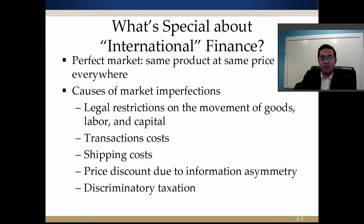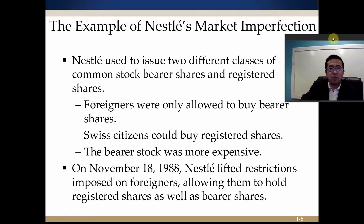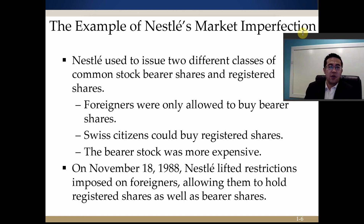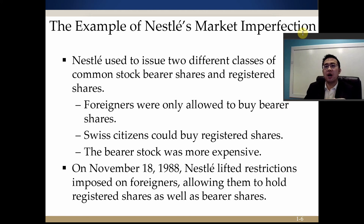There is also discriminative taxation, which is a very prominent issue in the current trade war between the US and China. Another example in financial markets is Nestle, a Swiss company. Nestle used to have two classes of stocks traded in the Swiss stock market — one class available only to foreigners (bearer shares) and another available only to Swiss citizens (registered shares). The bearer shares were more expensive for foreigners. However, on November 18th, 1988, Nestle lifted that restriction and allowed foreigners to hold registered shares as well.